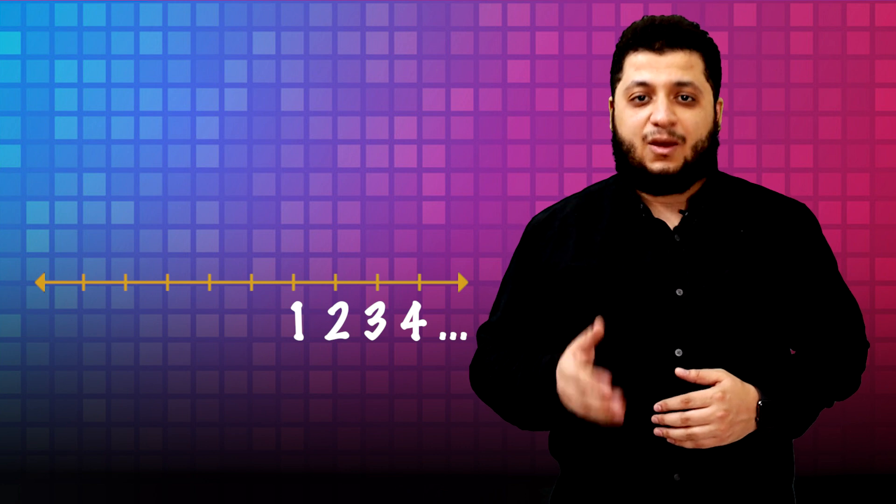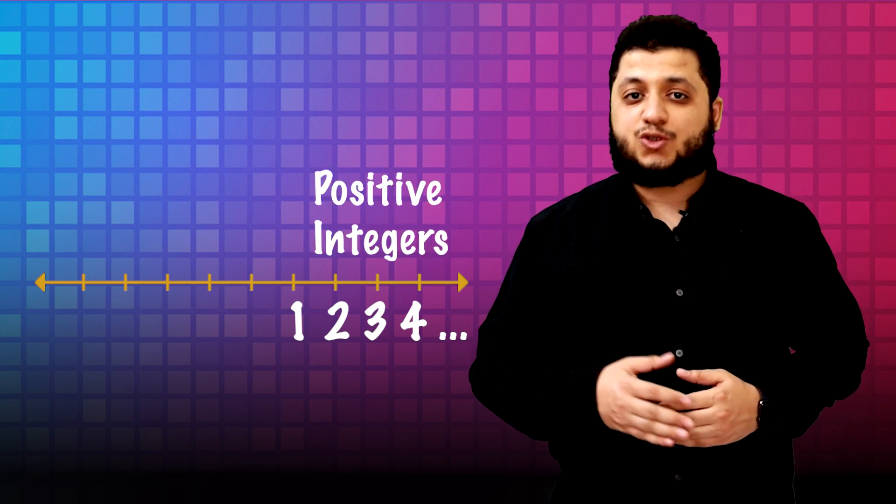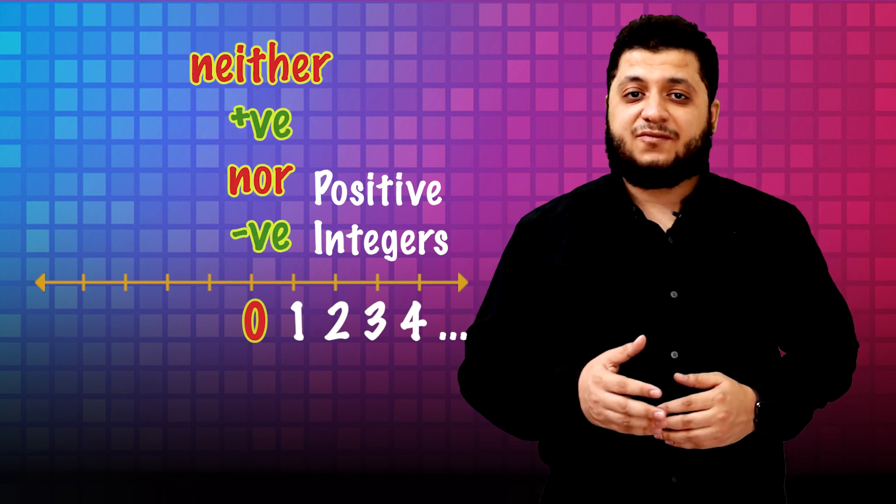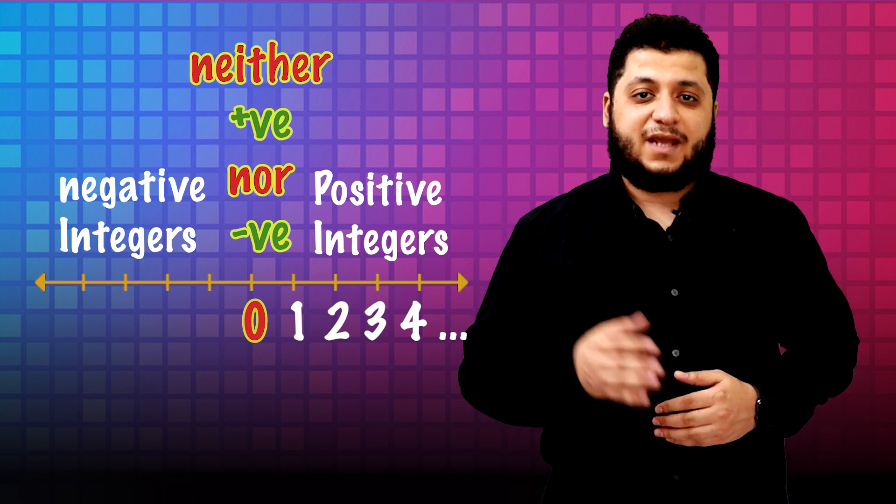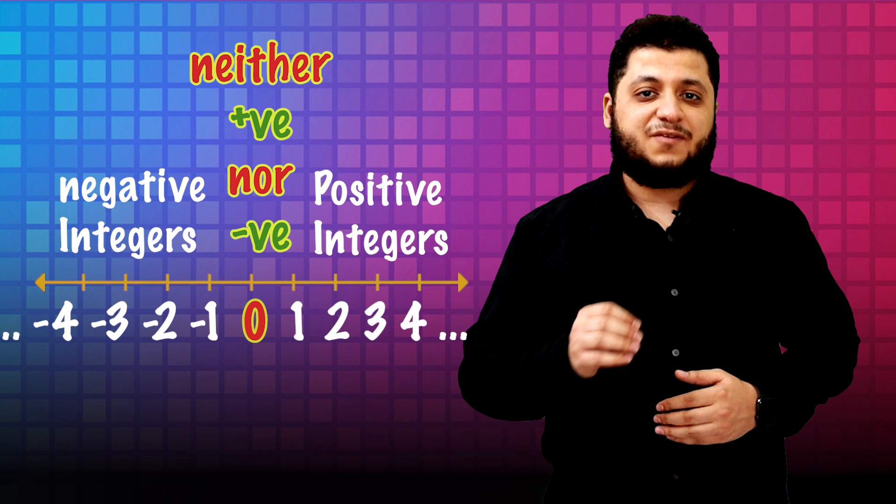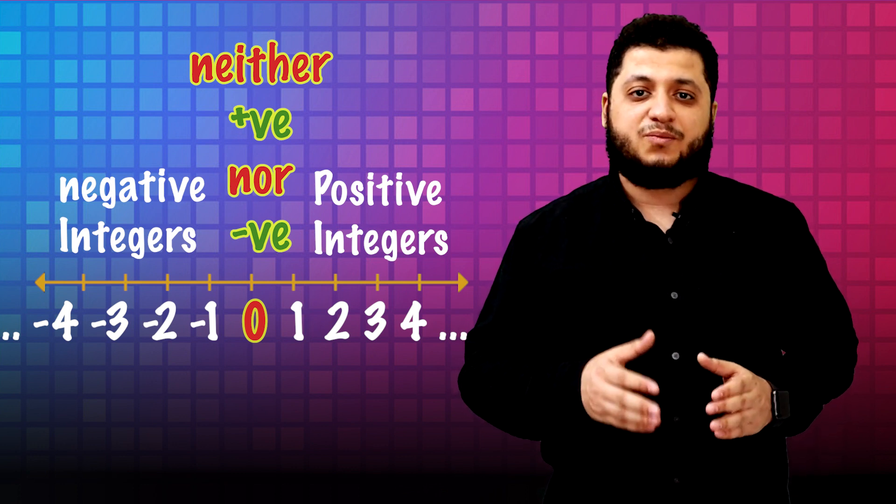To understand the integers, let us use number line. As you can see, on number line, we have numbers 1, 2, 3, 4 and so on, which are counting numbers. Or we can name them positive integers. Also, we have zero and zero is neither positive nor negative. Then we have negative integers. Negative 1, negative 2, negative 3 and so on. Negative integers are the opposite of counting numbers or opposite of positive integers.